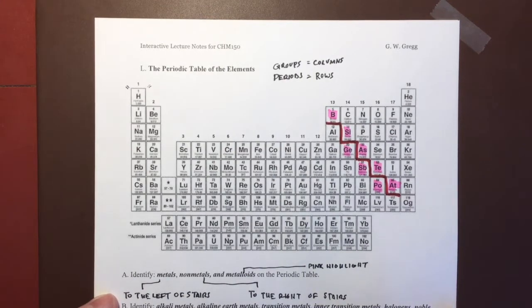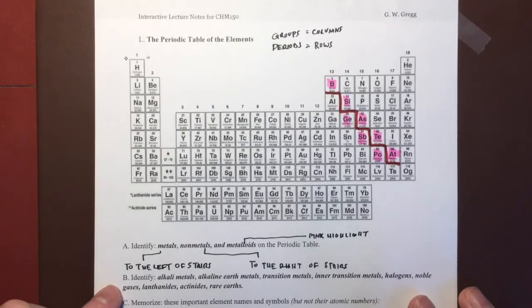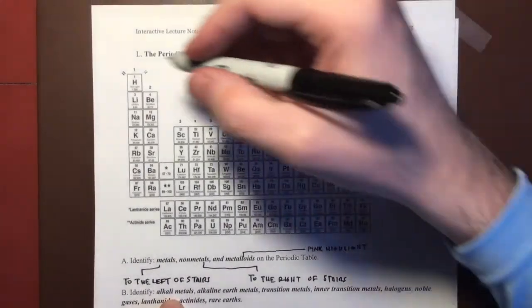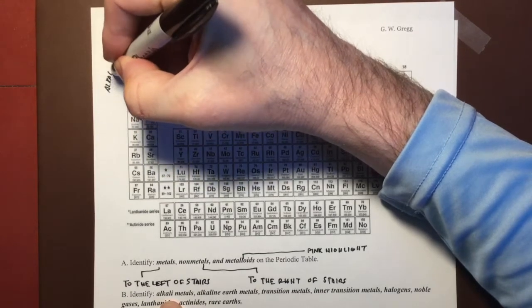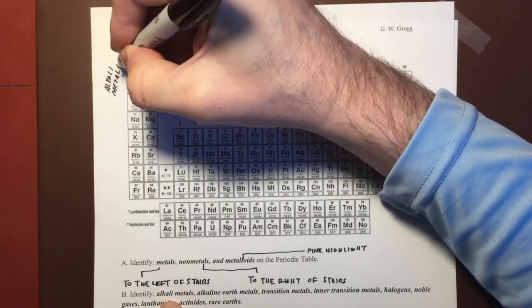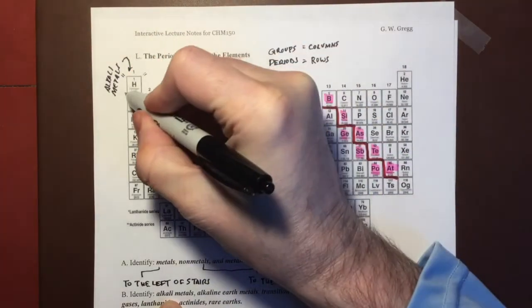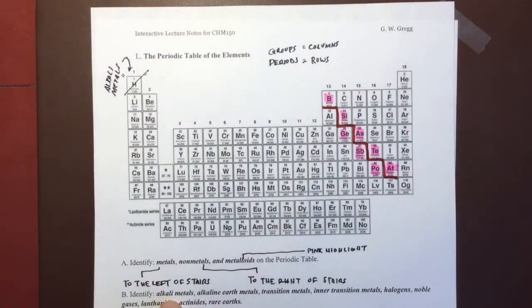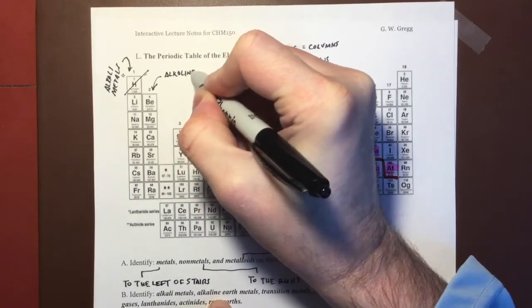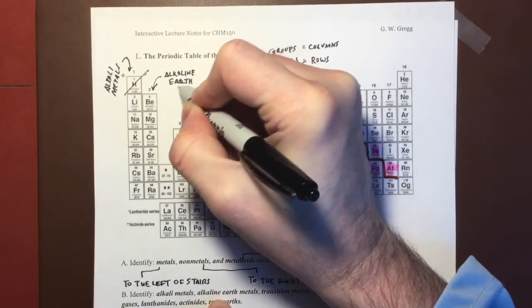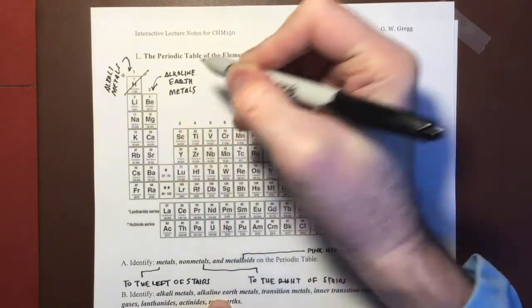Other categories that we need to be familiar with are listed down here. The first one is alkali metals, and alkali metals refers to group one with the exception of hydrogen, because we know that hydrogen is not a metal. Alkaline earths or alkaline earth metals is group two.